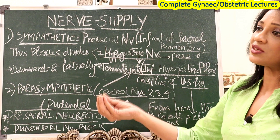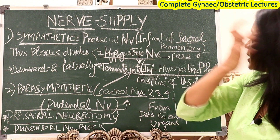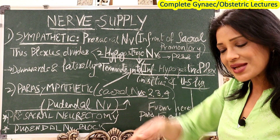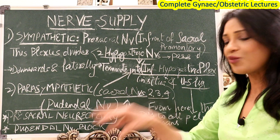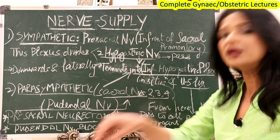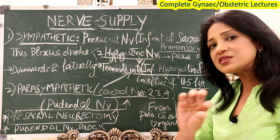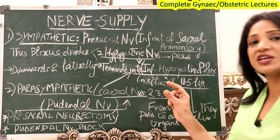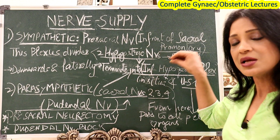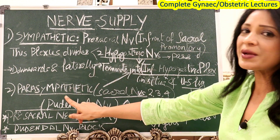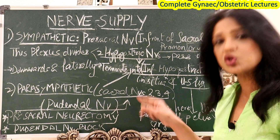Hypogastric means internal iliac, so there is a right and left hypogastric nerve traveling downward and laterally, terminating into the inferior hypogastric plexus. The inferior hypogastric plexus is situated in the position of the utero-sacral ligament. The parasympathetic fibers come from sacral nerves S2, S3, and S4, which also form the pudendal nerve, and their fibers also go to the inferior hypogastric plexus. So all sympathetic and parasympathetic fibers are interconnected.